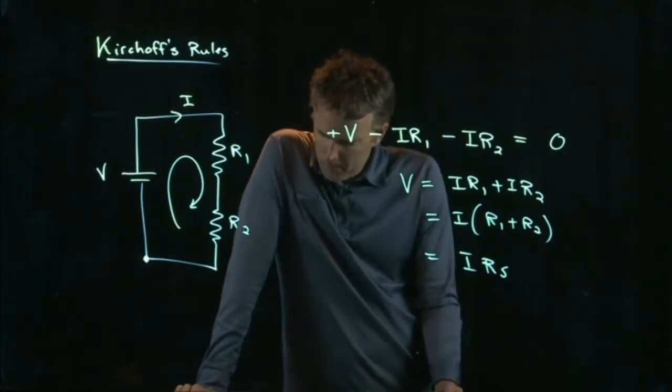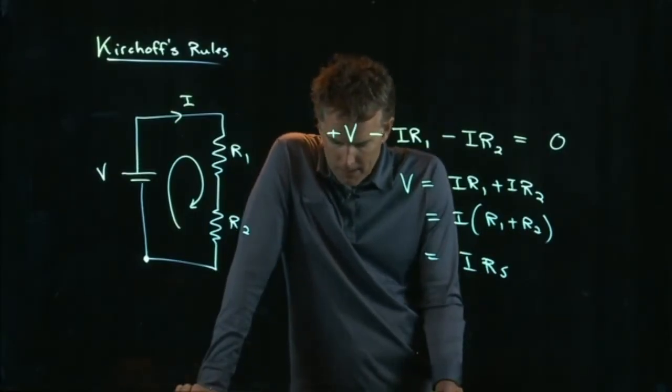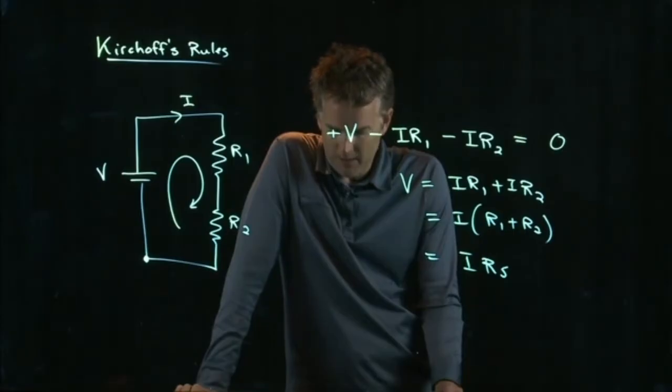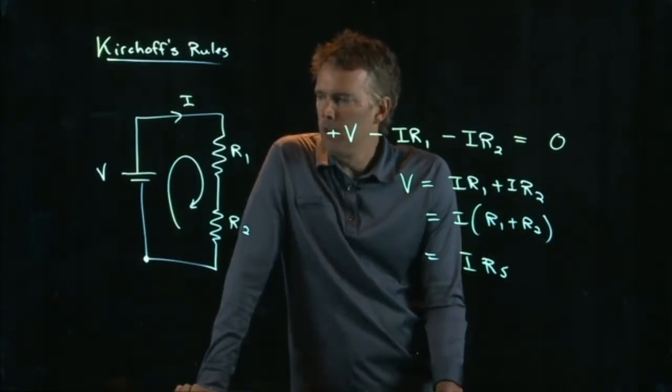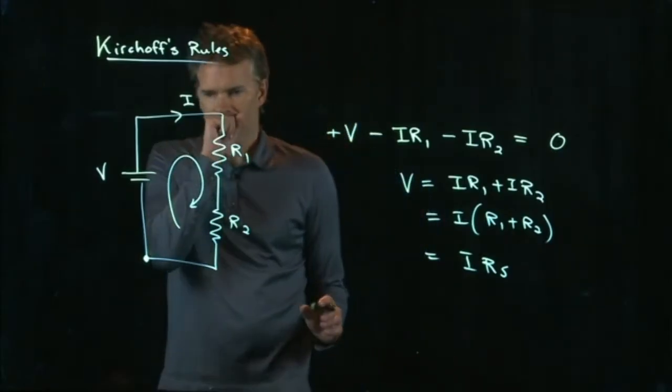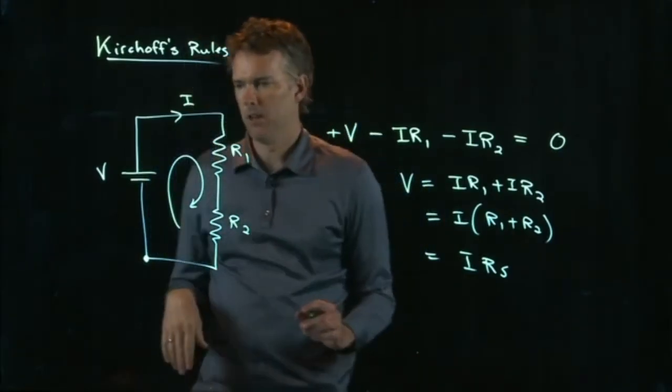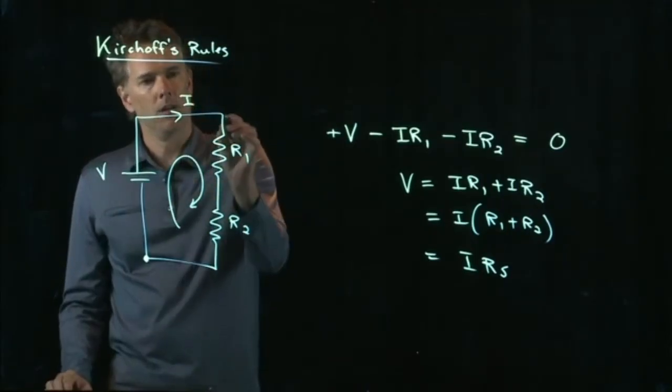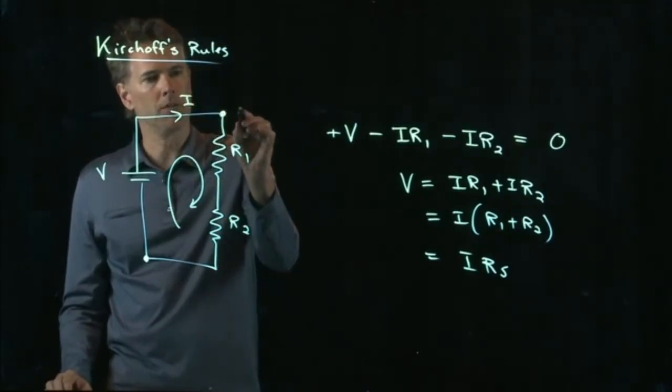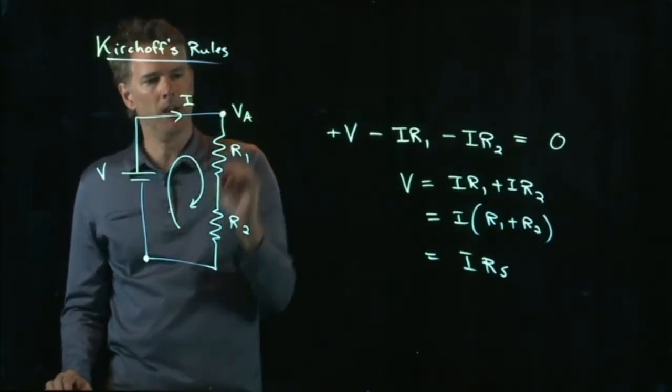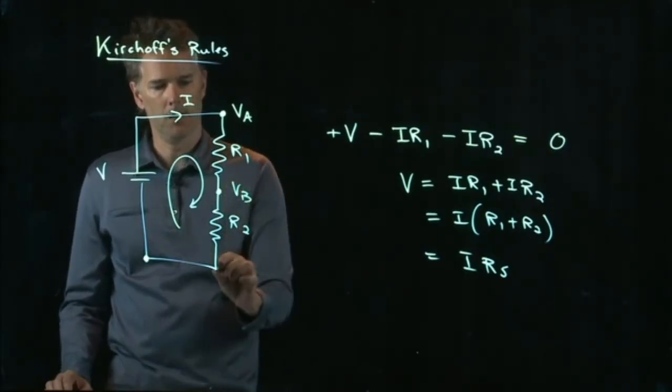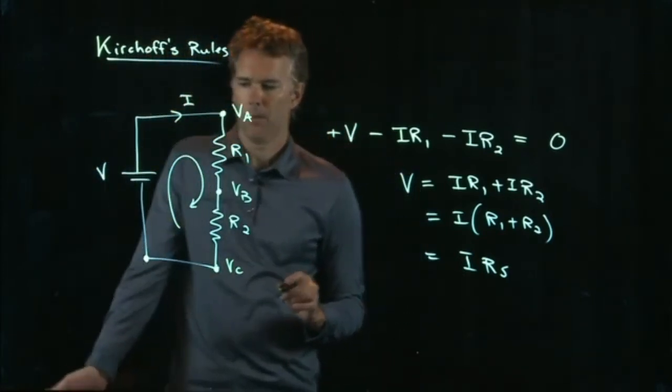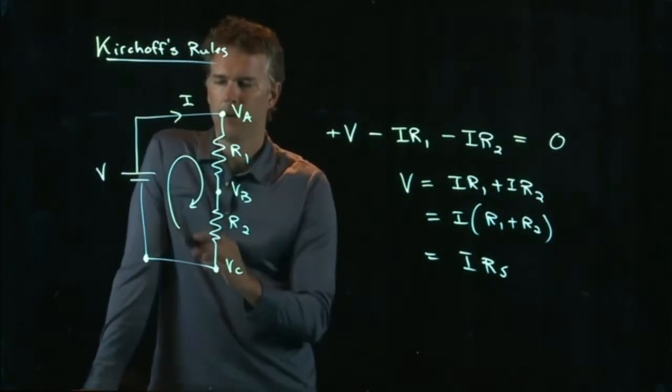Now, in the problem that we were just looking at, they wanted to know the voltage across the 960 ohm resistor. So let's think about this for a second. Let's say that this is up here. We will call this VA. We will call this VB. And we will call this VC. And we'll draw everything relative to ground here.